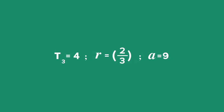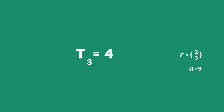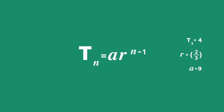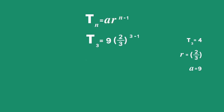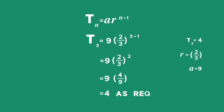We can check this formula for the nth term using one of the given terms in the geometric sequence. For example, we know that the third term is equal to 4. Substituting n equal to 3 into the general term yields T3 equals 9 times 2 thirds to the power of 3 minus 1, which equals 9 times 2 thirds squared, which gives 9 times 4 ninths, which is equal to 4, as required.